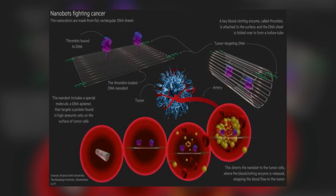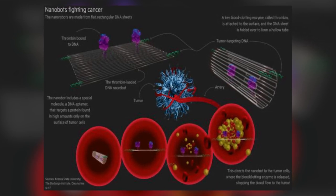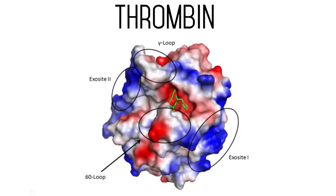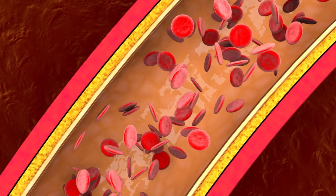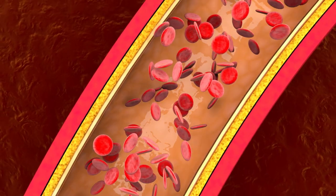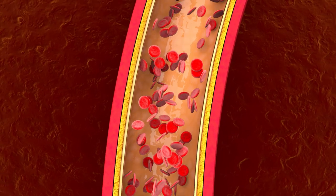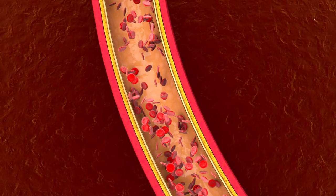Each nanorobot was made from a flat rectangular DNA origami sheet, 90 nanometers by 60 nanometers in size. A key blood clotting enzyme called thrombin was attached to the surface. Nucleolin, a particular protein, was selected as a target for DNA aptamers, as large concentrations of this protein are exclusively present on the surface of tumor endothelial cells.